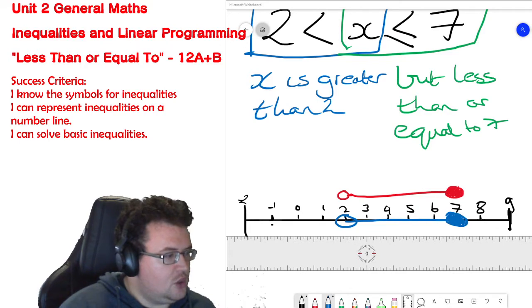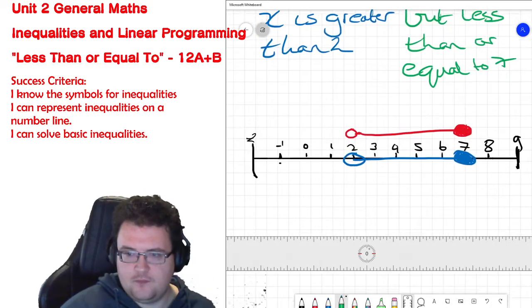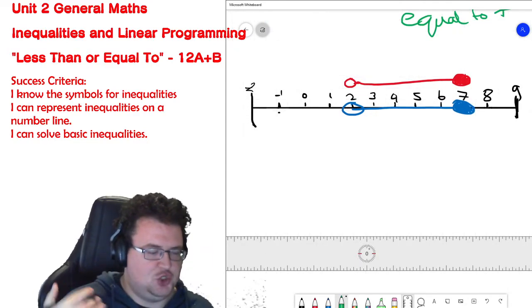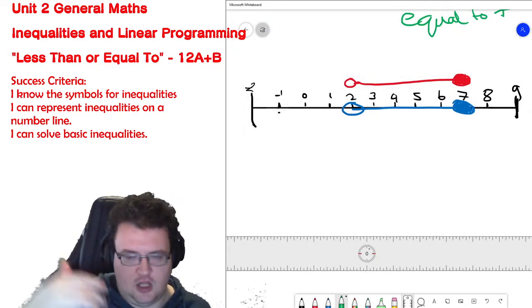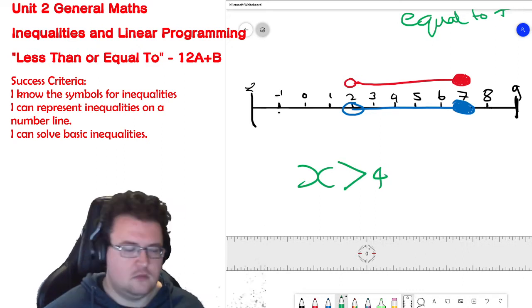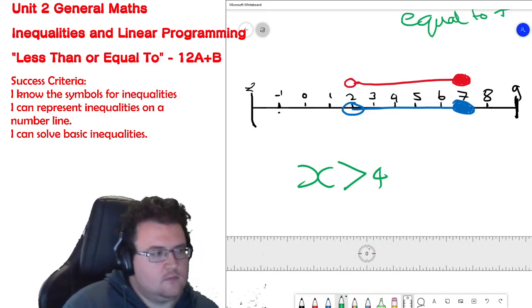So you are going to be asked to construct some number lines. But before we do that, I need to give you one more example. What if I don't have a double pronged inequality like the one that we just did? What if it is instead just...